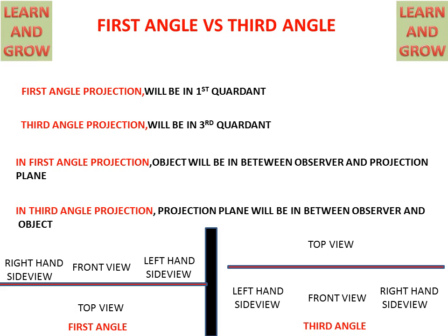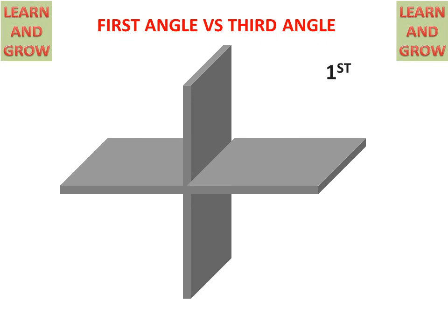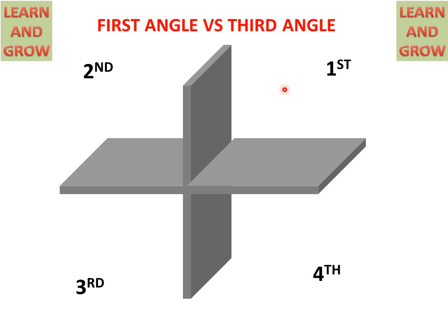Now we understand it easily by the quadrants. We have four quadrants: first quadrant, second quadrant, third, and fourth quadrant. If any object lies in the first quadrant, then this will be first angle projection. If it lies in the second quadrant, it will be second angle projection. If it lies in the third, then it will be third angle projection. And if the object lies in the fourth quadrant, then it will be fourth angle projection.